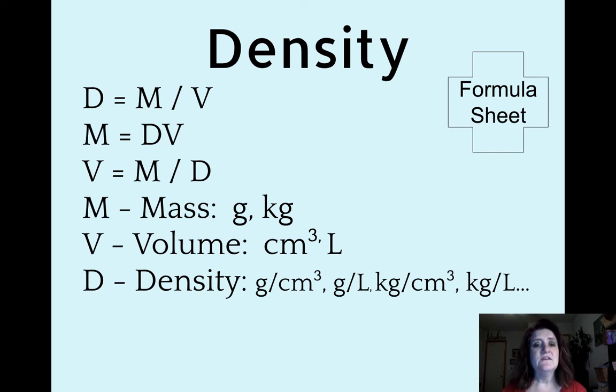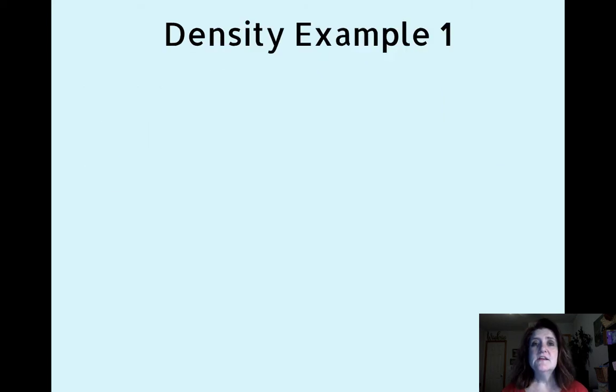The D stands for density and it is a mixed unit like miles per hour. Density will be measured in grams per centimeter cubed, grams per liter, and so on. Let's look at several examples of how we're going to use these equations to solve density problems.